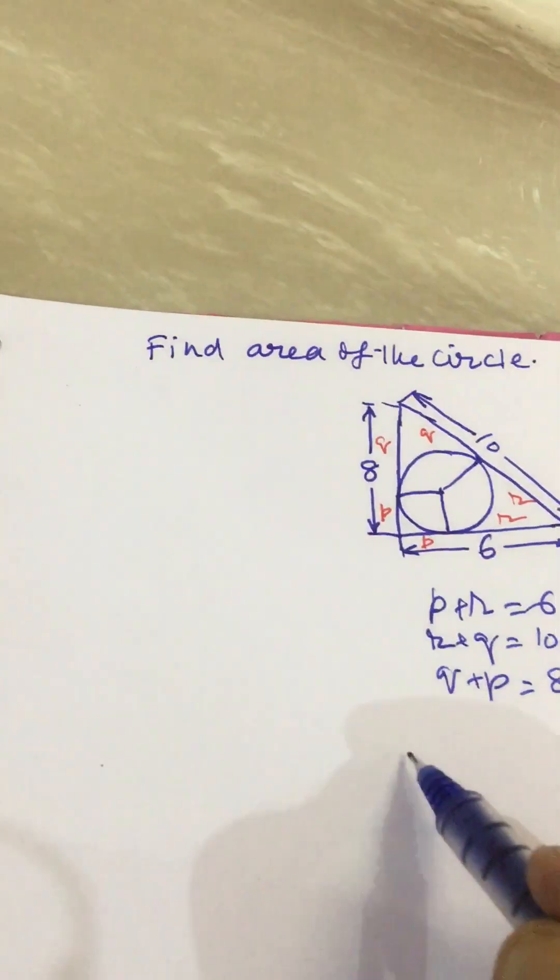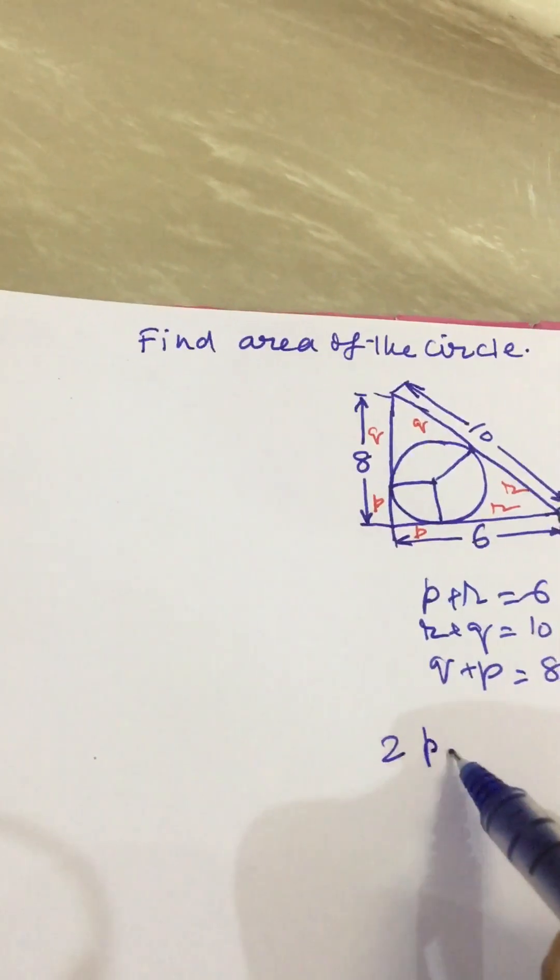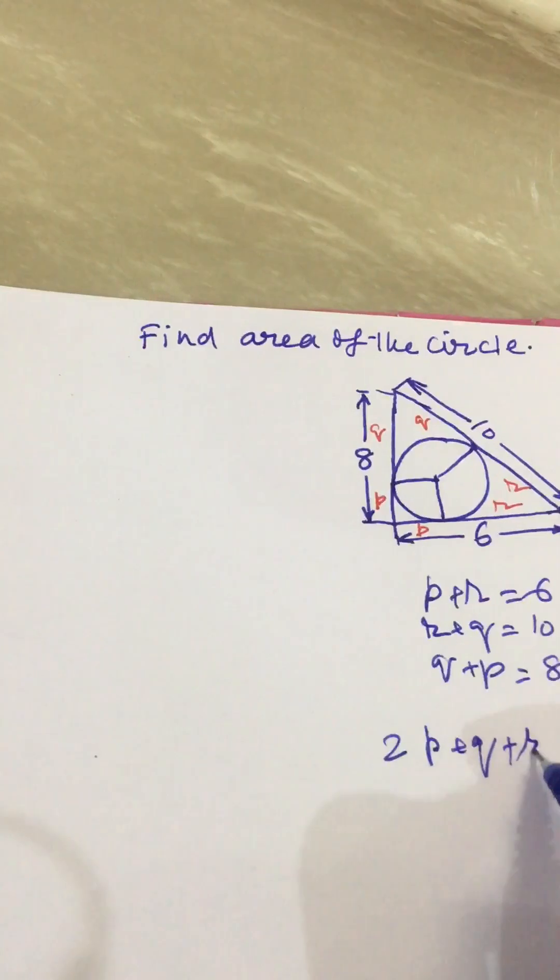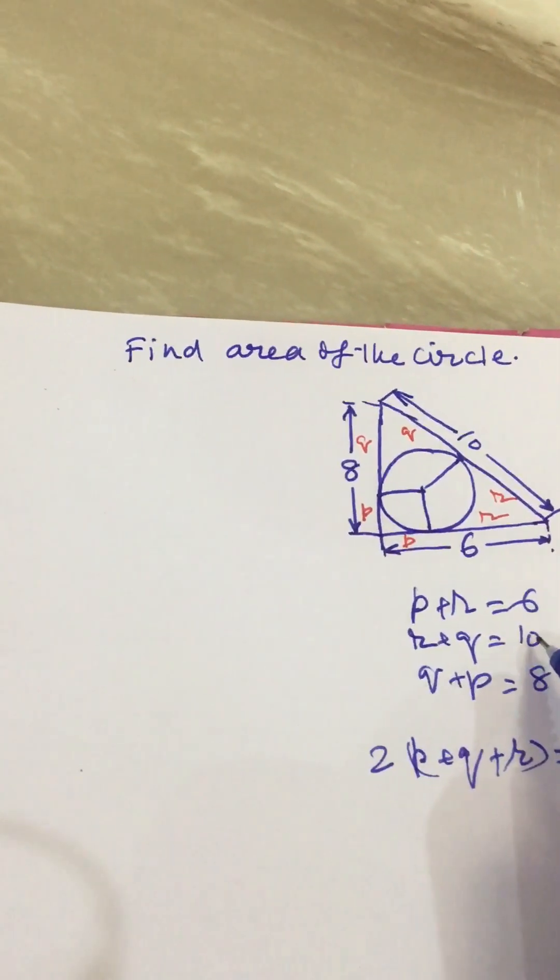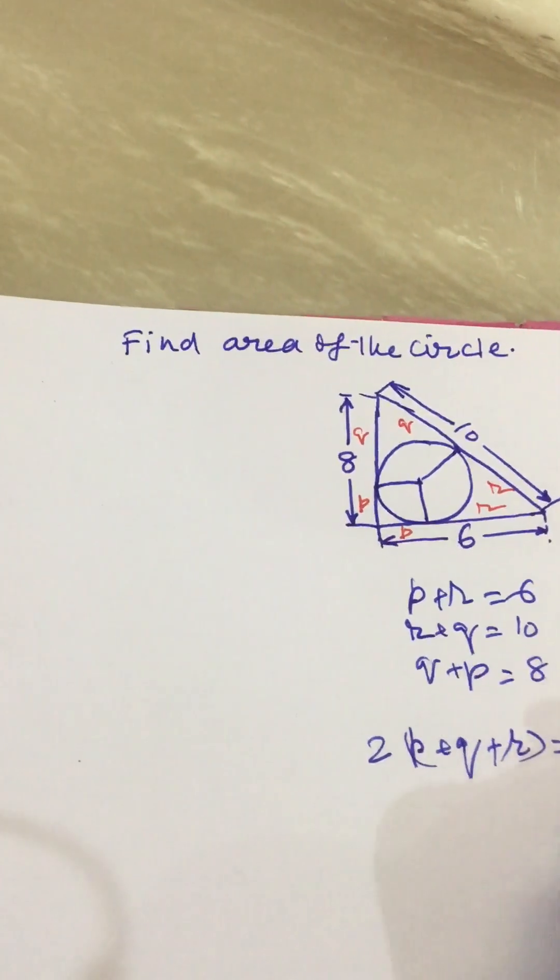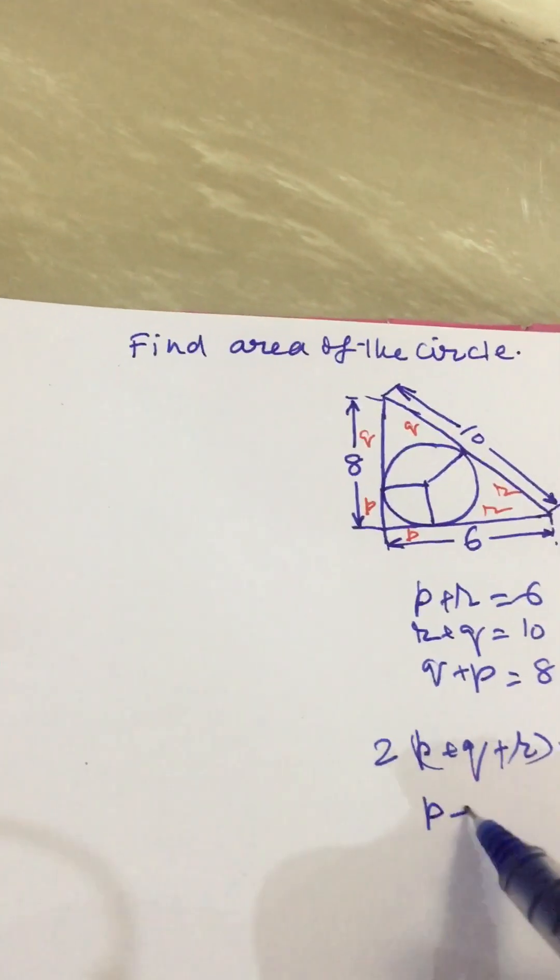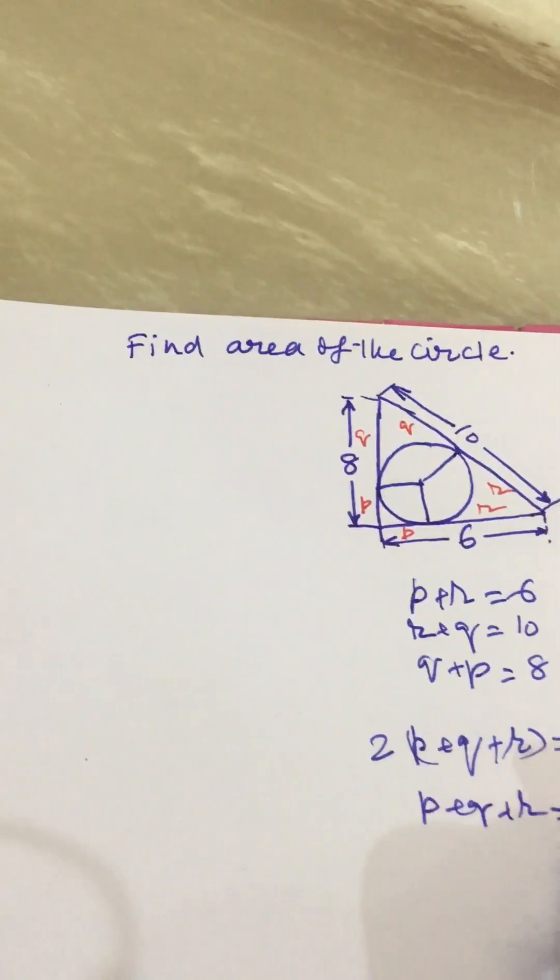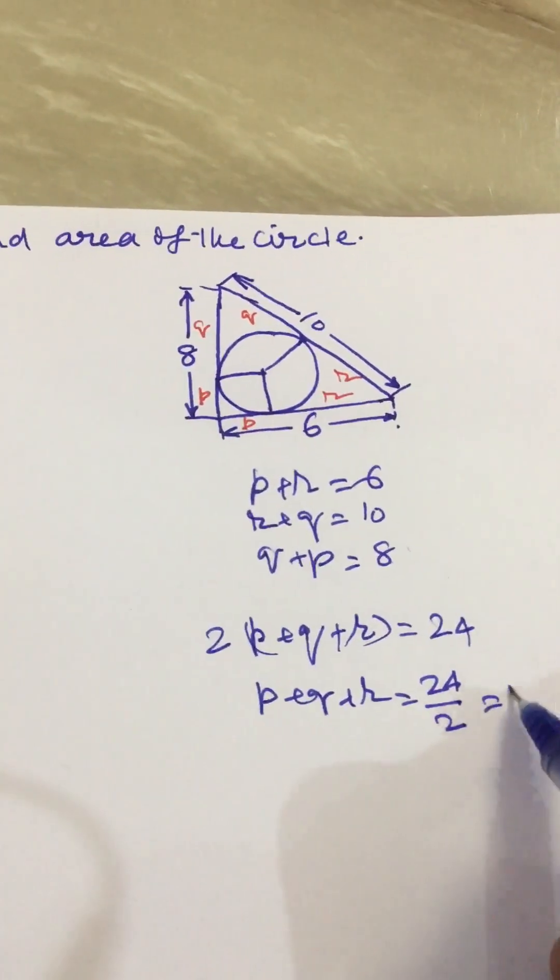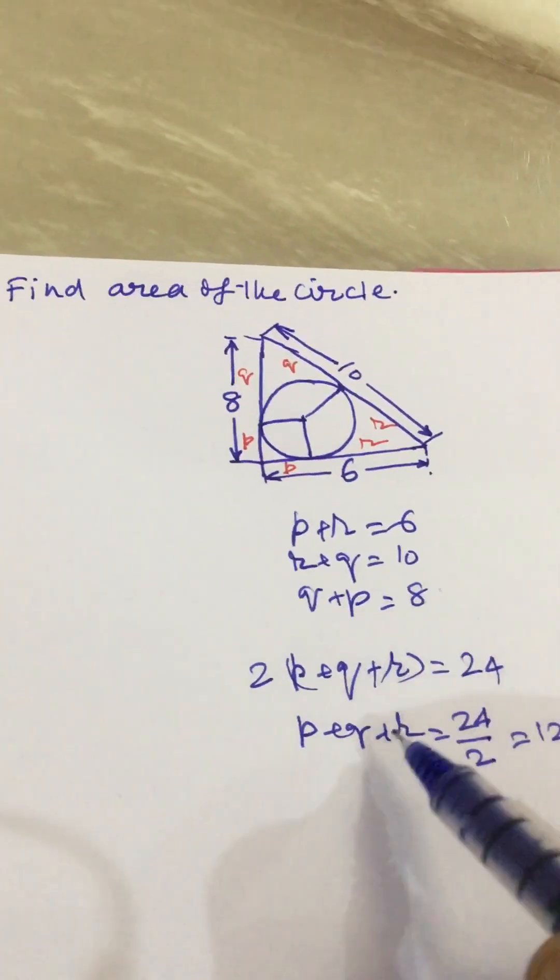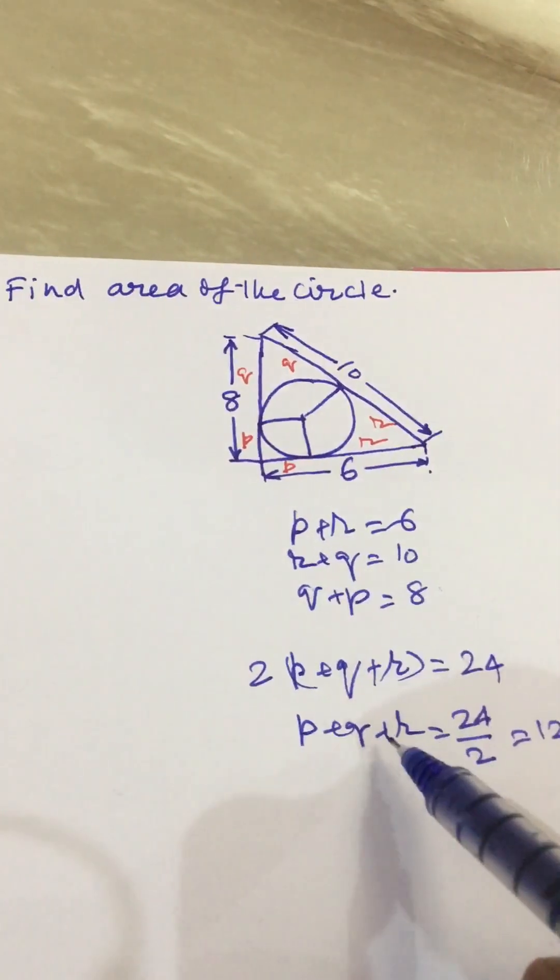Adding these equations we get 2 times P plus Q plus R equal to 16 plus 8, that is 24. So P plus Q plus R will be equal to 24 divided by 2, which is 12. Now we subtract this equation from this equation.